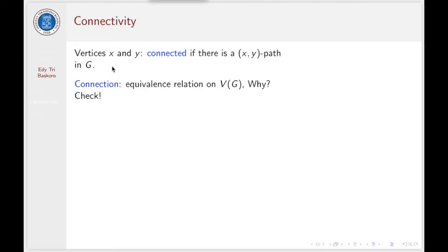Two vertices X and Y are connected if there is a walk or a path from X to Y in G. The relation of connection is an equivalence relation on the set of vertices of G. This connection satisfies the reflexive property, because X is connected with X, as there is a zero length walk from X to X.